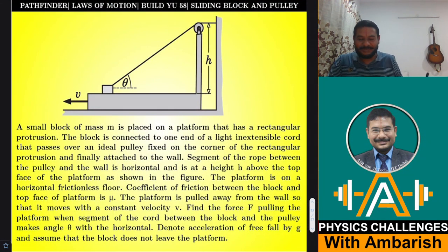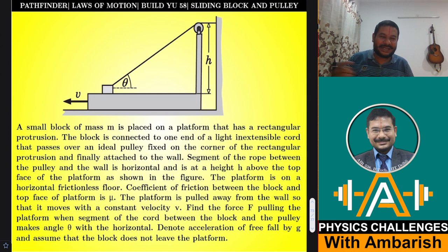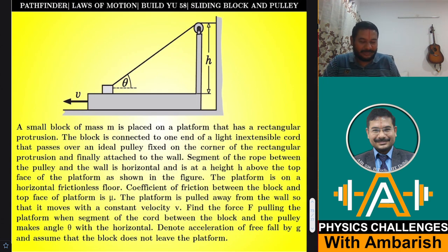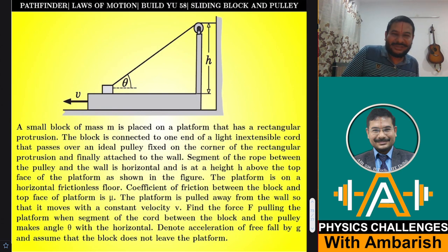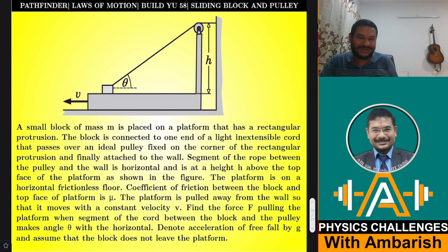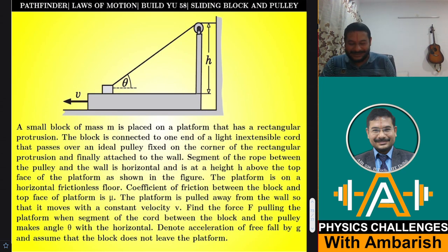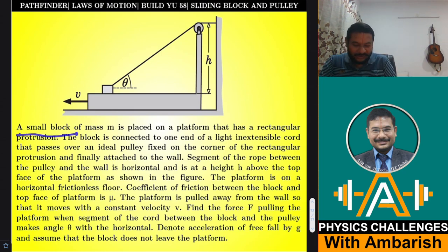Here is the problem — Pathfinder Laws of Motion, Build Your Understanding, Problem 58: Sliding Block and a Pulley on the Plank. Let me read out the question. A small block of mass M is placed on a platform that is a rectangular protrusion.